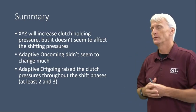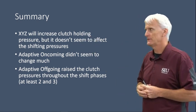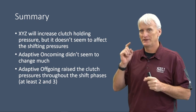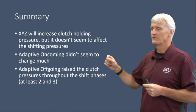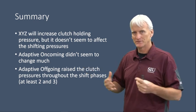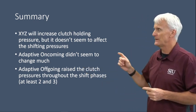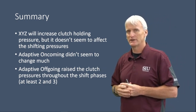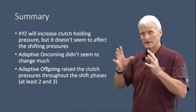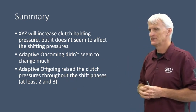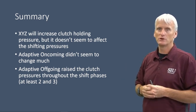To summarize what we looked at today: changing the XYZ pattern tables will increase clutch holding force but doesn't seem to affect the actual shifting pressures much. The adaptive oncoming values — when changed — didn't seem to alter actual pressures that much. But the adaptive off-going definitely changed those values, especially during the phases two and three identified on the slides, altering them either up or down depending on which direction you modify.